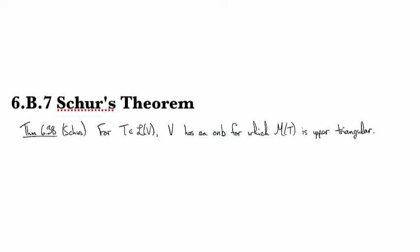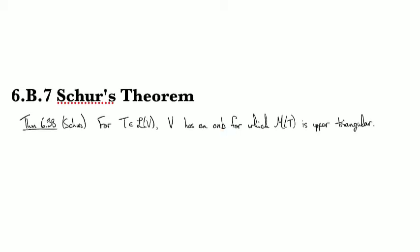The heavy lifting here is going to be done by this result we have in chapter 5, which says that a matrix is upper triangular with respect to a given basis if and only if the span of those vectors is invariant.